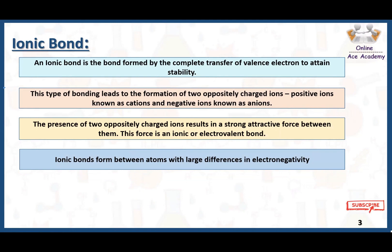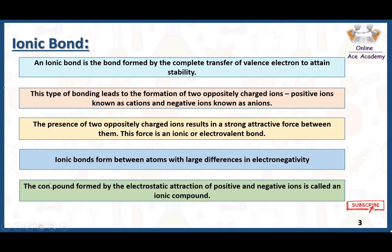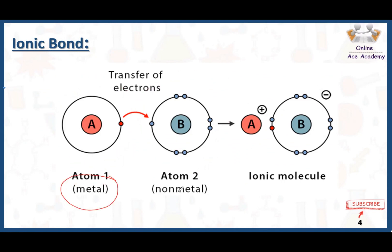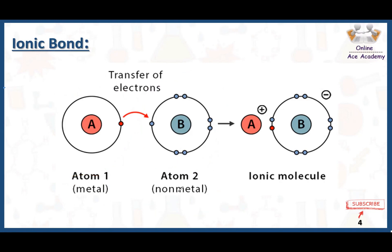Ionic bonds form between atoms with larger differences in electronegativity. Electronegativity means the power or tendency of an atom to attract an electron towards itself. The compound formed by electrostatic attraction of positive and negative ions is called an ionic compound. Here you can see atom number one is a metal and atom number two is a non-metal.